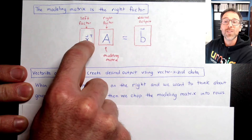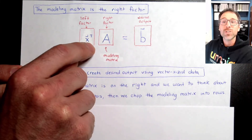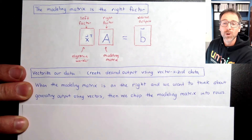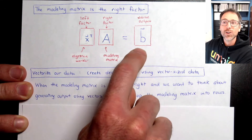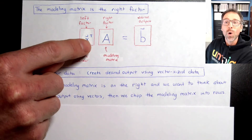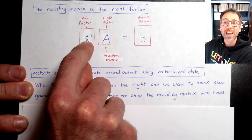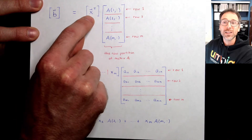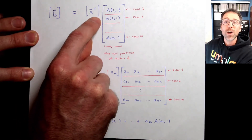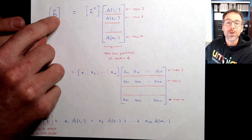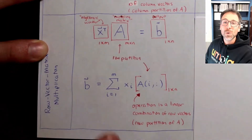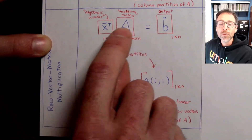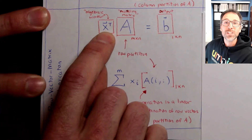Now suppose the modeling matrix shows up on the right, and we use an algebraic worker on the left hand side — that's row vector matrix multiplication. If we want to vectorize our data and produce the output using vector valued operations, we chop the modeling matrix into rows and take a linear combination of those rows, where the scalars come from the left hand side vector. So for row vector matrix multiplication with vectorized output, we take row partitions and scale each row of A by the individual entries of the row vector x transpose.